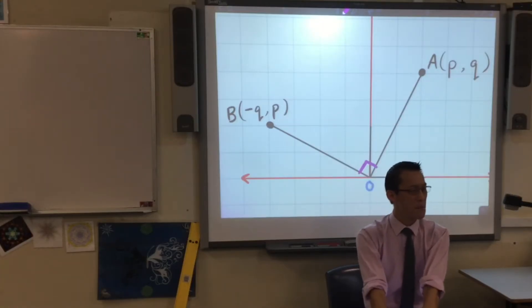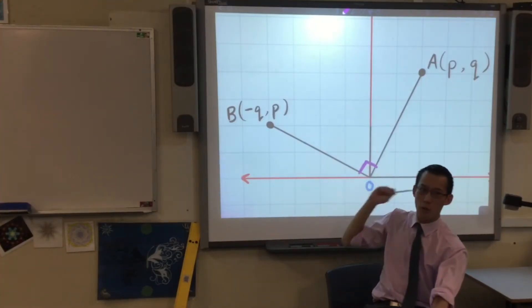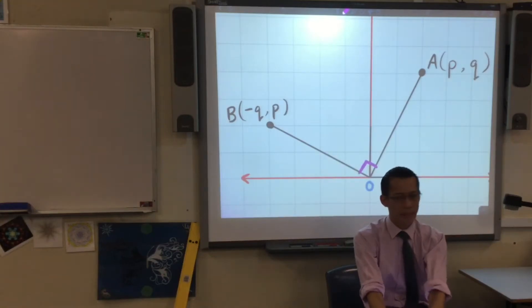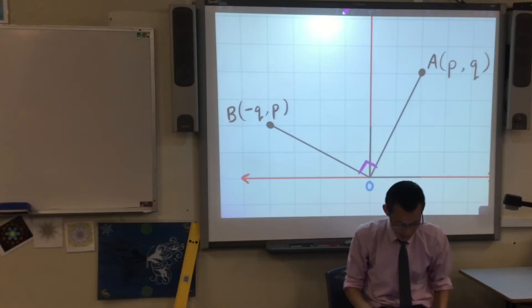Now, remember you told me, parallel lines, they have the same gradient. Identical. One is two, the other is two. Well here, clearly these gradients are related. But they're not the same, obviously, they're not parallel. So how are we going to work it out?